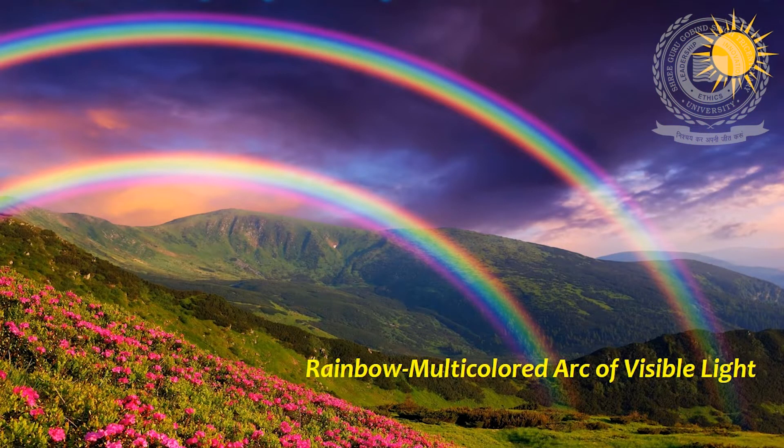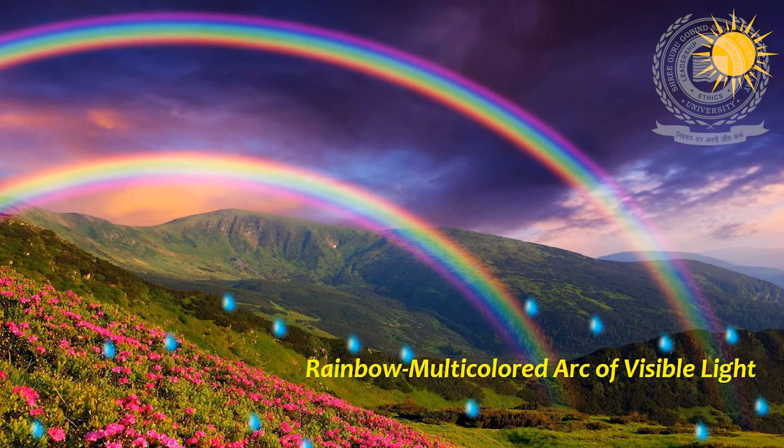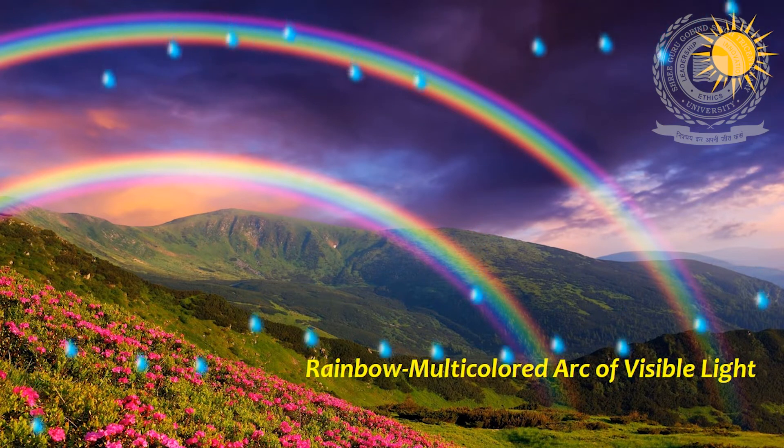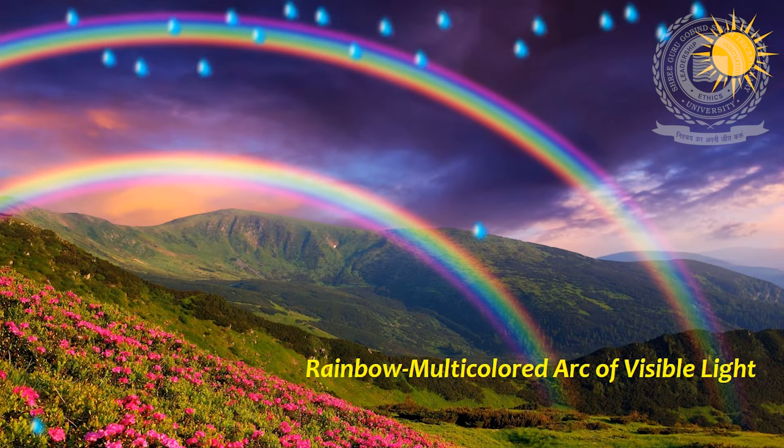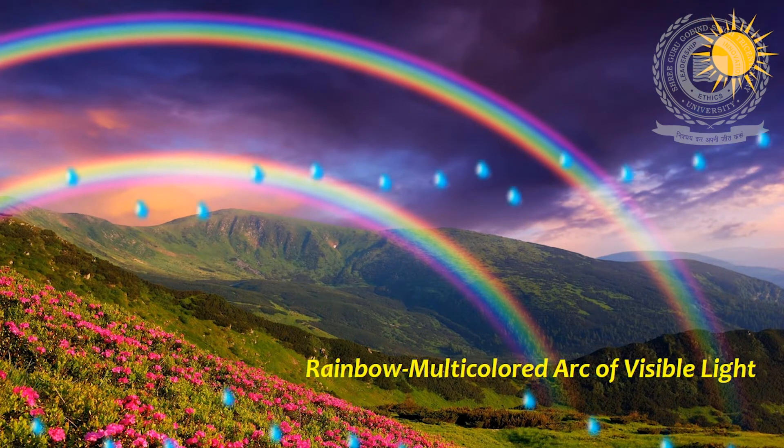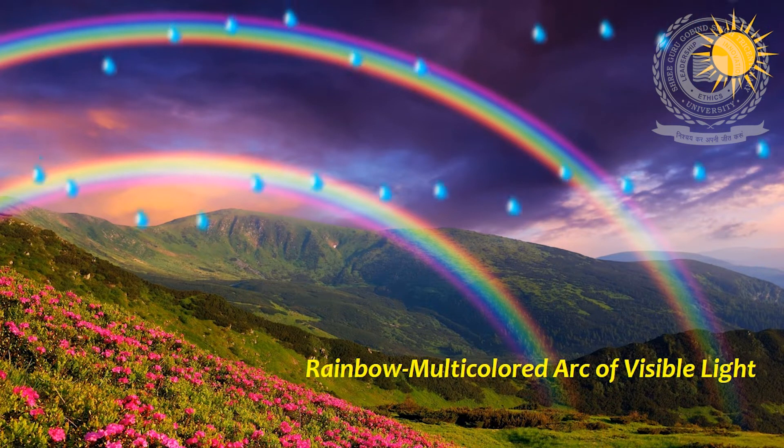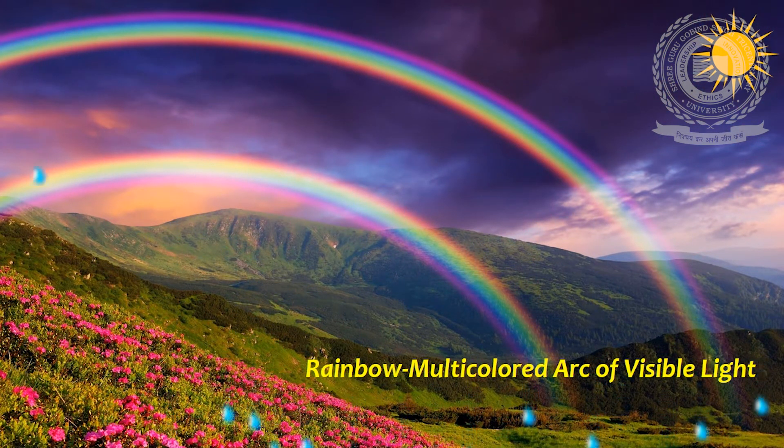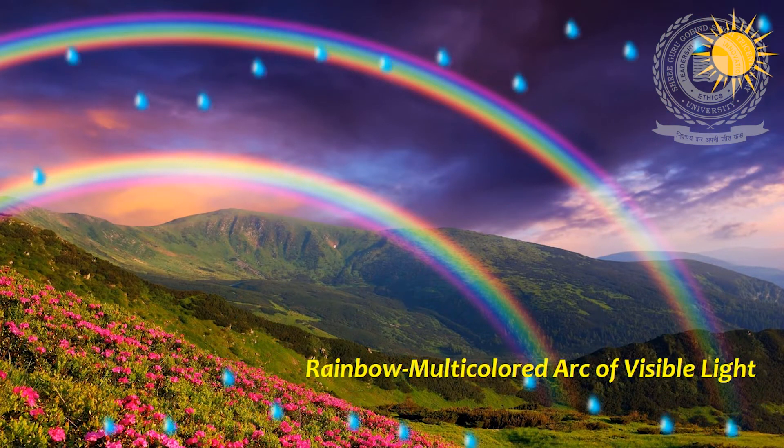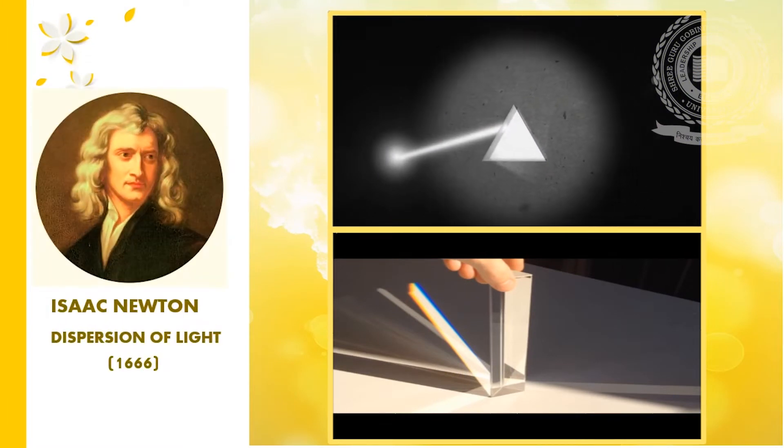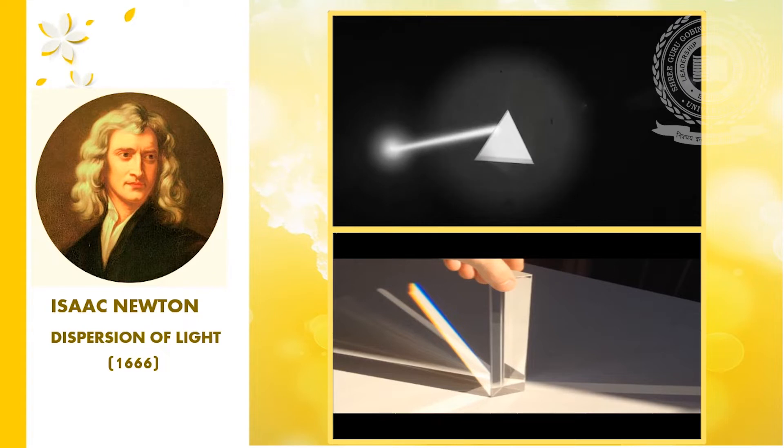Let's start the lecture with the Formation of Rainbow of Colours. We all know that the rainbow is multi-colored arc of visible light that frequently appeared after rain showers. For thousands of years, people were surprised at the formation of rainbow of colours but could not understand the reason behind its formation. In 1666, the eminent personality, Sir Isaac Newton, addressed the problem by studying the nature of light to discover the origin of colours.